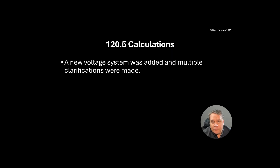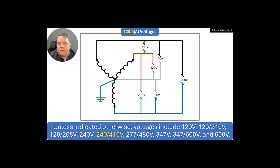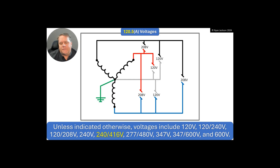Section 120.5 on calculations had a new voltage system added and multiple clarifications made. Under 120.5A, voltages unless indicated otherwise include: 120, 120/240, 120/208, 240, 240/416 (which is new), 277, 480, 347, 347/600, and 600. If you're in the United States, 347/600 is not likely — that's very common in Canada, basically what they use instead of 277/480. The new voltage added is 240/416, which is a three-phase voltage not too common here in the States.